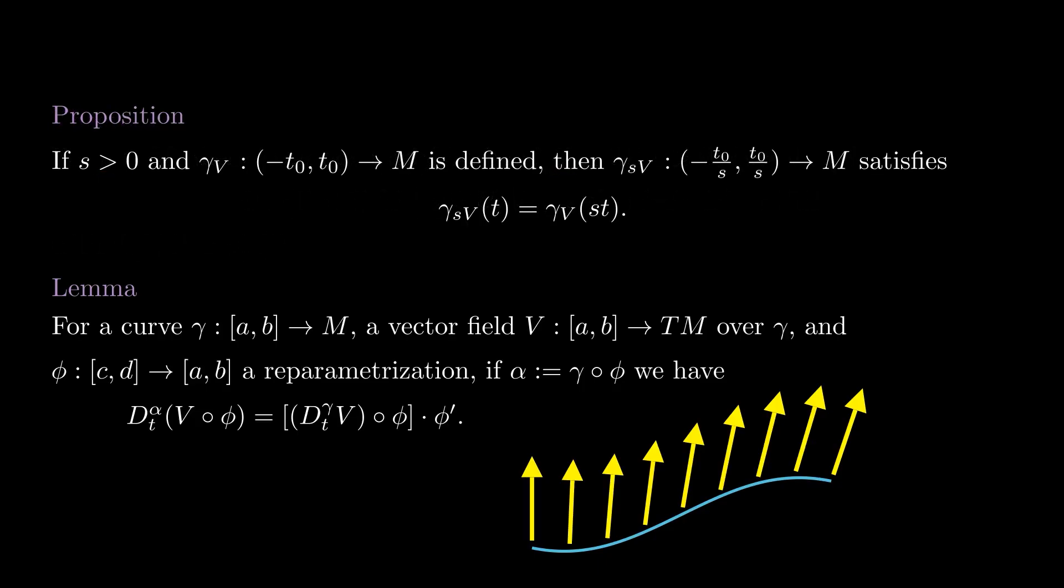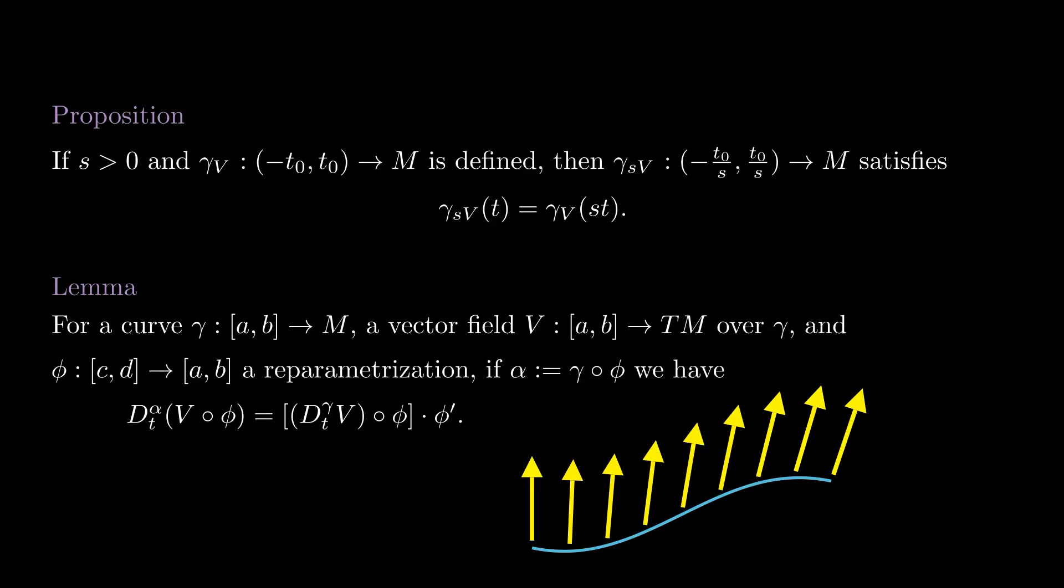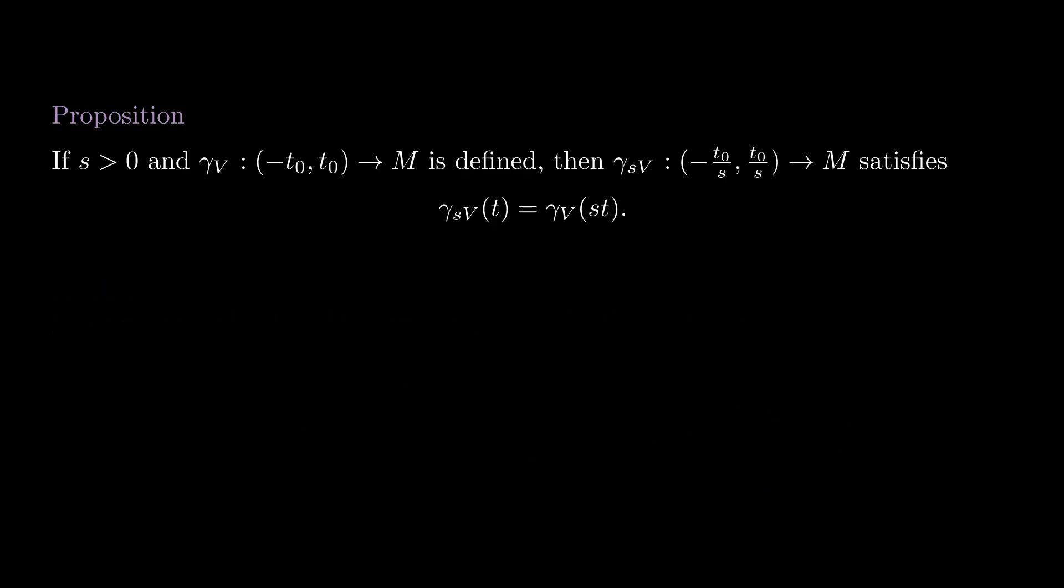Using this chain rule, we now prove one of the most important properties of geodesics. If we have a geodesic gamma v defined on an interval minus t0 to t0, then for any positive s, the geodesic gamma sv is defined on the interval minus t0 over s to t0 over s, and gamma sv at t coincides with gamma v at st.